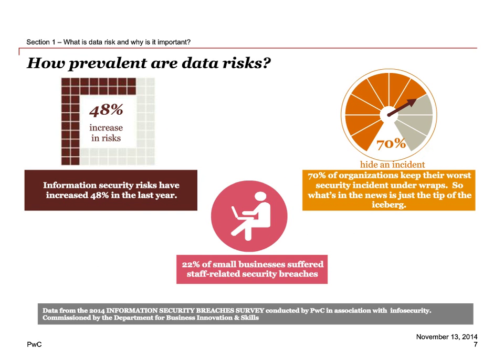Now let's look at a few key statistics on how prevalent data risks are today. Information security risks have increased 48% in the last year. 22% of small businesses suffered staff-related security breaches, which could be from the outside or an accidental or intentional breach from the inside. What's really interesting is that 70% of organizations keep their worst security incident under wraps — unless they feel they have to disclose those breaches, they won't want to. One of the major megatrends driving this is globalization, with new market pressures to share information across the world — distributed supply chains, global engineering, HR information.